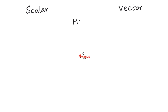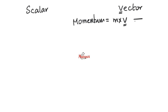Let's try momentum. What is momentum? Momentum is the product of mass times velocity. Mass is scalar but velocity is a vector because velocity has a direction. Scalar times vector is a vector. So momentum is a vector — it has a direction and a magnitude.